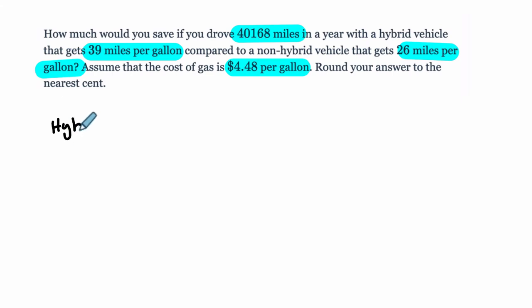So for the hybrid, I'm going to find the cost of driving the hybrid in a year. Then I'm going to find the cost of driving the non-hybrid, and then I'm going to subtract the two to compare them. So for the hybrid, we can take those miles, 40,168, and divide them by 39. That's how many miles per gallon we get.